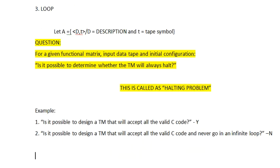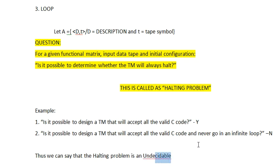Therefore we can say that the halting problem is not solvable — it is undecidable. We have already learned about undecidable languages when discussing recognizable languages for a Turing machine. The term undecidable itself says that it is not at all possible to decide whether it will execute or halt. That is why we say the halting problem is undecidable.